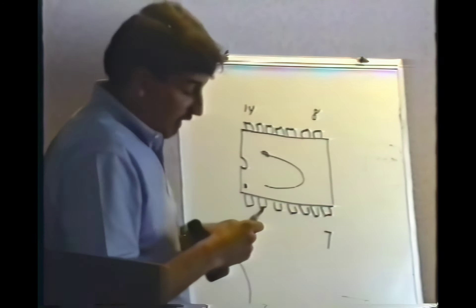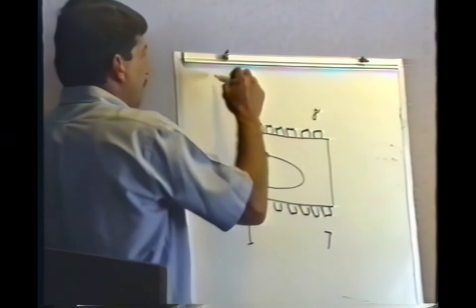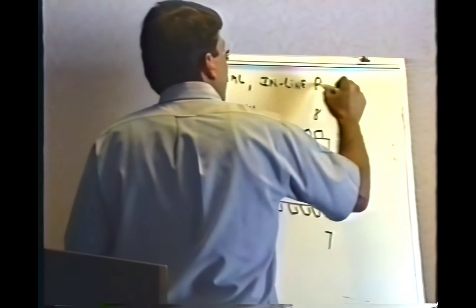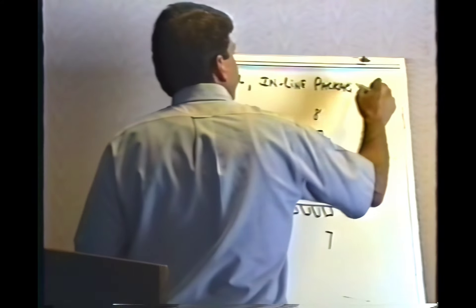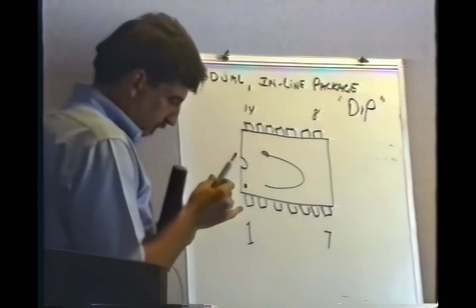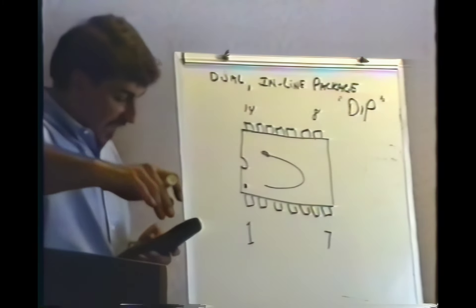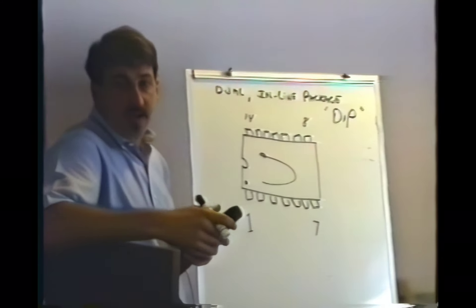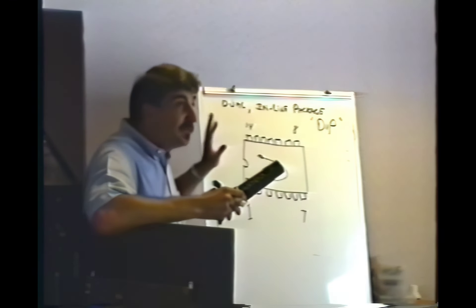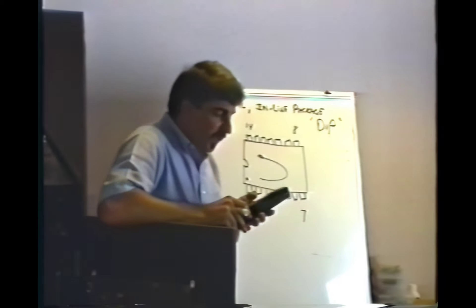These integrated circuits — this package — is called a dual inline package, or DIP. They come in all kinds of different sizes: 8-pin DIPs, 14-pin like this one, 16, 18-pin, 24, 60-pin dual inline packages. You know the little switches we use in games to set the options, like the number of plays per coin? Those are called DIP switches.